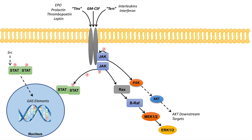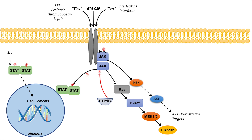Another set of proteins that can activate STAT independently of JAK include SRC protein kinases. There are several different families of negative regulators of the JAK-STAT pathway. One of those is the protein tyrosine phosphatases, such as PTP1B — protein tyrosine phosphatase 1B. These essentially perform what their name suggests: they dephosphorylate phosphorylated tyrosine residues. They can dephosphorylate the JAK protein, shutting it off, and they can also dephosphorylate the STAT protein.